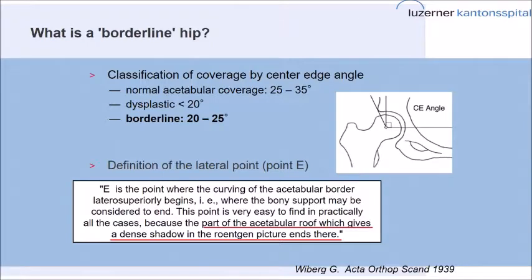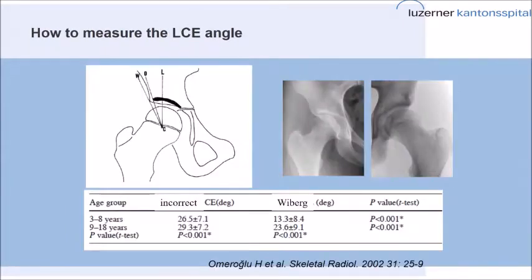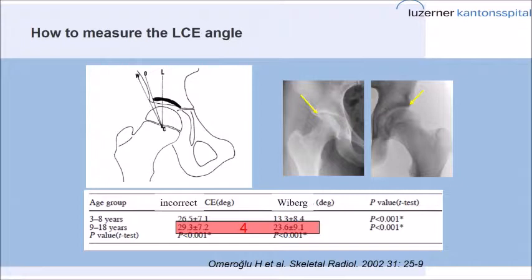One problem I always see is how we have to measure the central edge angle. It's clear from his publication that we have to measure the most lateral point of the sourcil as seen on the AP radiograph — on this right hip that would be that point, and on the left hip that point. It's not the most lateral point of the acetabular bone you can see. Omeroglou showed that using this incorrect angle — measuring the most lateral point of the bone instead of the sourcil — gives a difference in young adults of about 4 degrees, which may just be the difference between a borderline or a dysplastic hip.